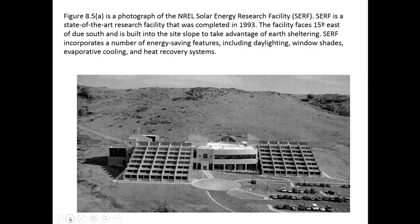This photograph is of the National Energy Research Facility, a state-of-the-art research facility built in the early 1990s. Interestingly, it faces 15 degrees east of south and is built onto a slight slope to take advantage of earth sheltering, using the hill for shading. It has many energy features such as window shades, evaporative cooling, and heat recovery systems, and is built as an example of how passive energy can minimize HVAC needs.